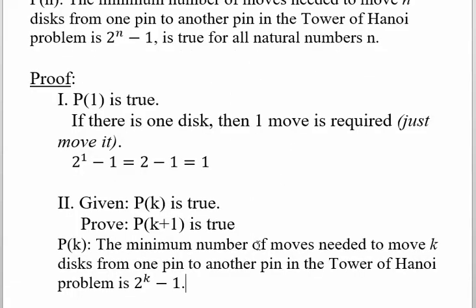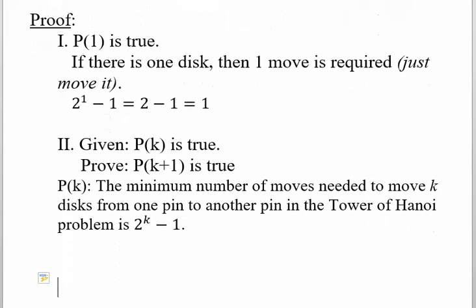The minimum number of moves needed to move k disks from one pin to another in the Tower of Hanoi problem is 2^k - 1. Now we assume that we have k+1 disks.